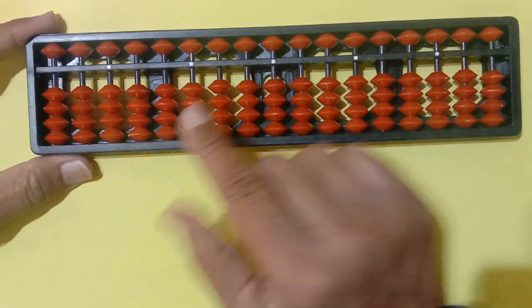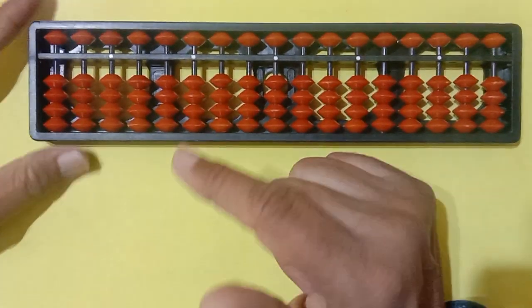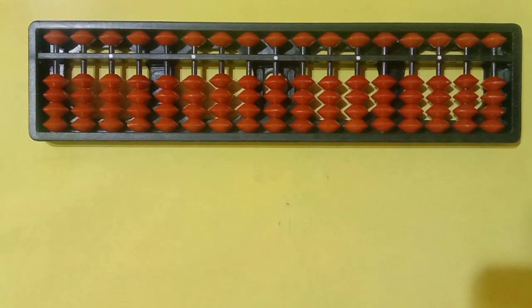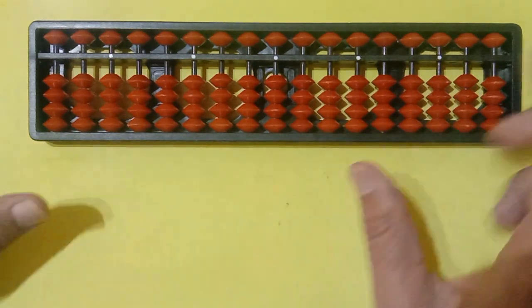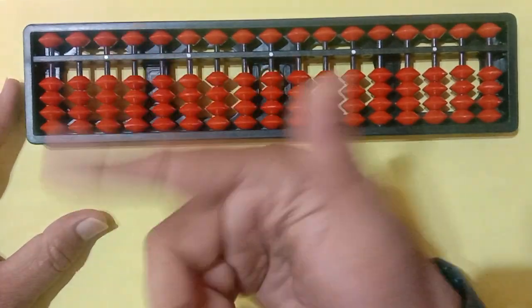If you go to the thousandth place, it will give 1000, 2000, 3000, 4000, 5000. Like this, 6000, 7000, 8000, 9000. If it goes on continue. Again, you will get the same result. 10,000, 20,000 like this.